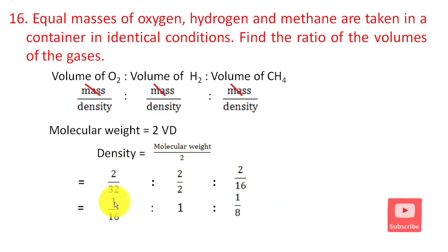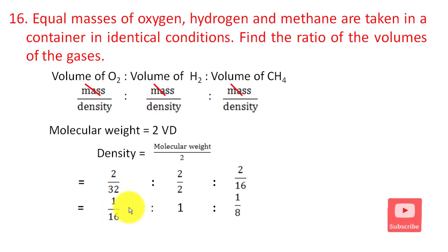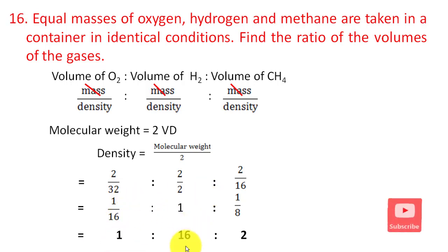The volumes are proportional to 1/16, 1/1, and 1/8 respectively. Converting to whole number ratios by multiplying through by 16, the ratio of volumes of O₂ : H₂ : CH₄ is 1 : 16 : 2.